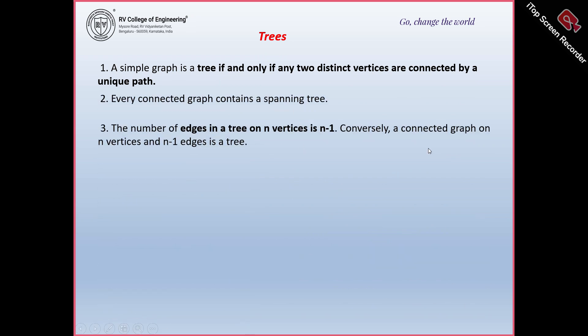Every connected graph contains a spanning tree. A spanning tree is a tree which has all the nodes of the given graph. The number of edges in a tree with n vertices is n minus 1. This can be proved by using mathematical induction on the number of edges. As a base case, a single vertex has no edges, and two vertices have exactly one edge. Conversely, if a connected graph on n vertices has n minus 1 edges, then it is definitely a tree.